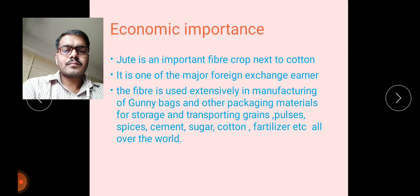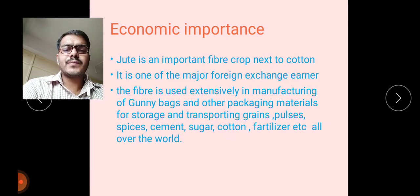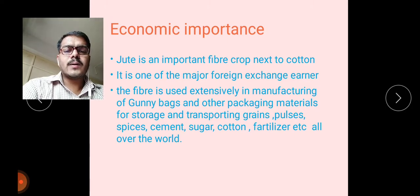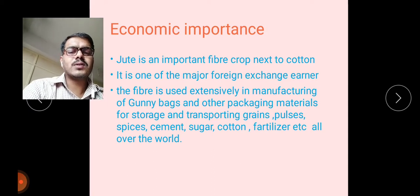Jute is also used in making ropes, carpet, rugs, and twines. It is also useful for fuel and making gunpowder and charcoal. These are some important industrial uses of this crop. It is also used as raw material for paper industries for making paper.